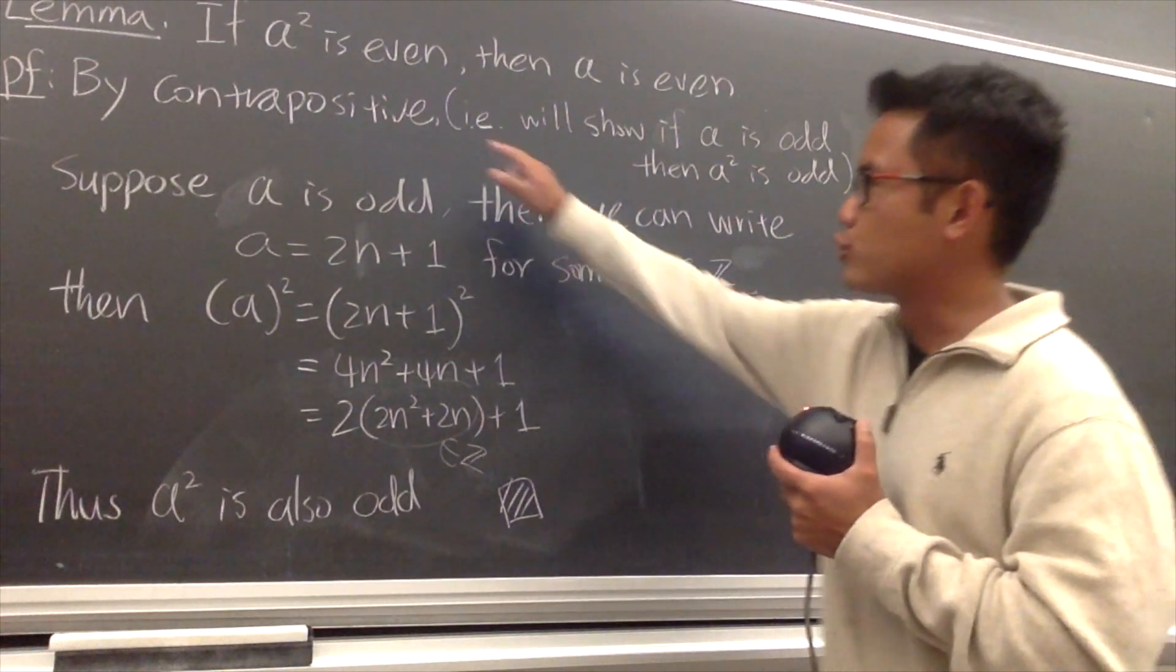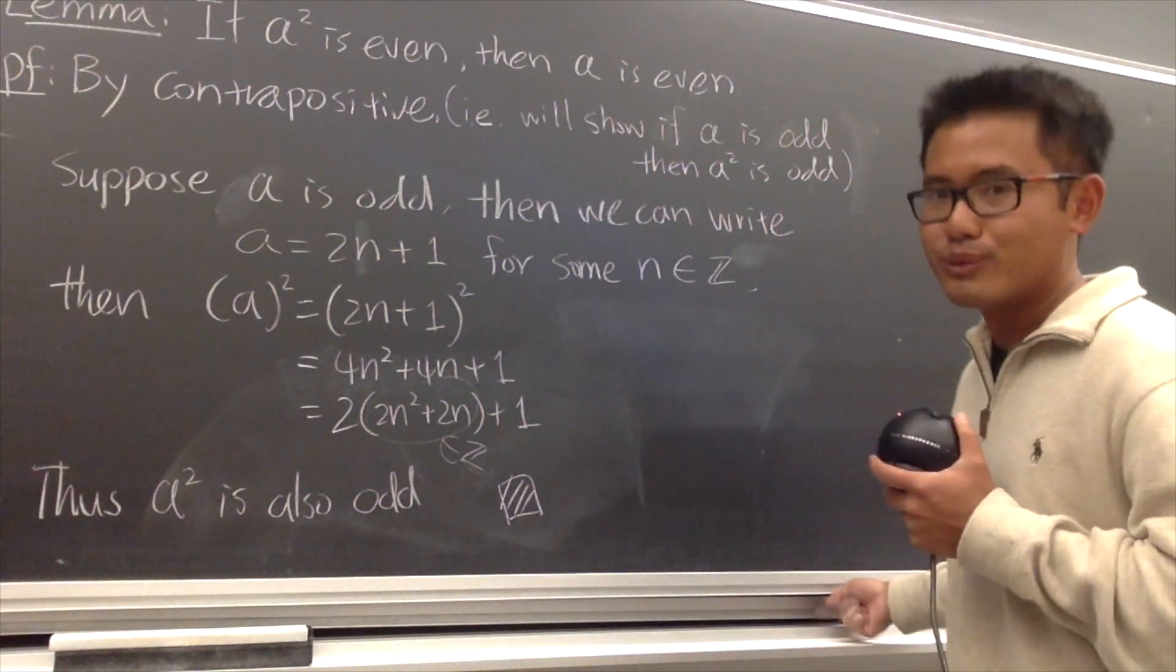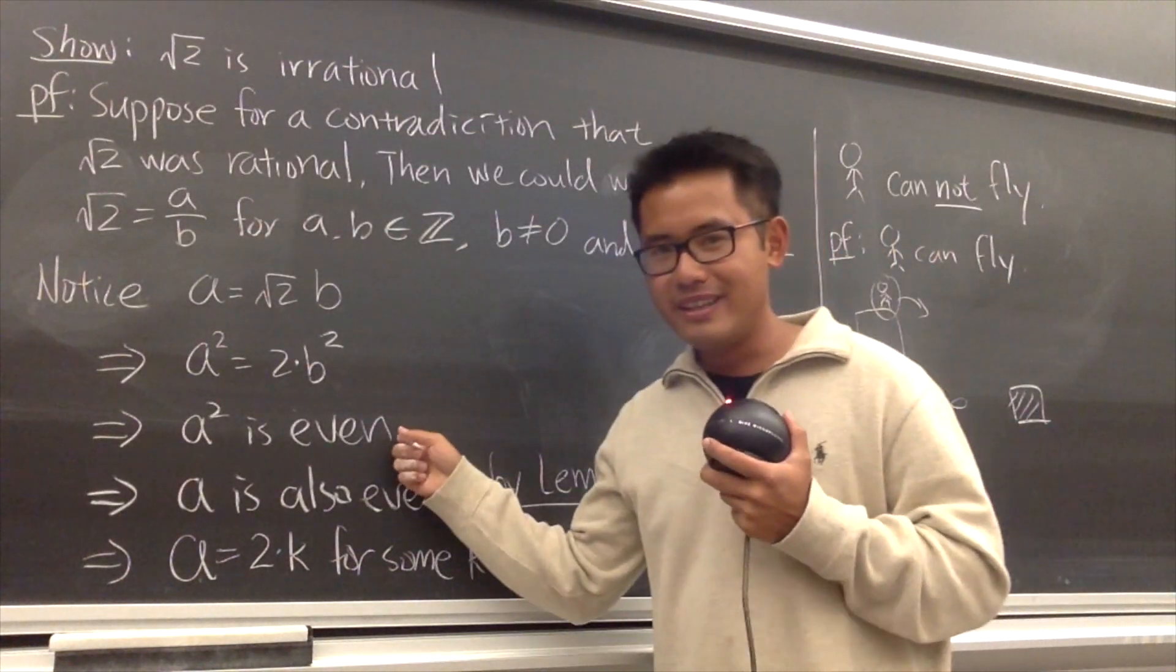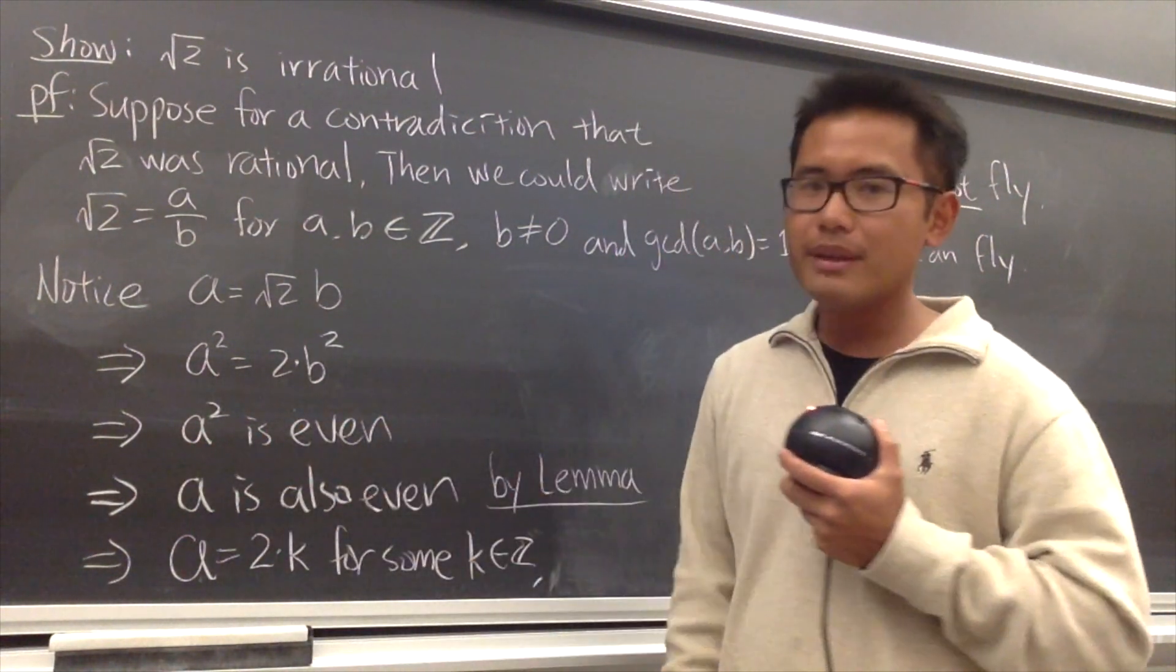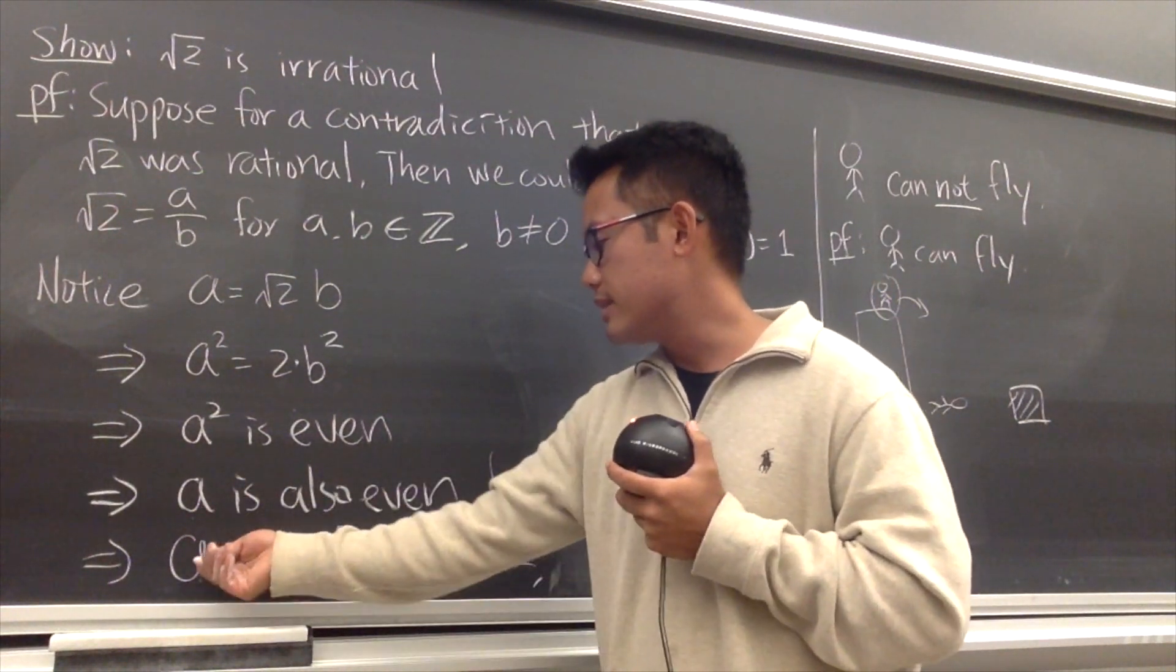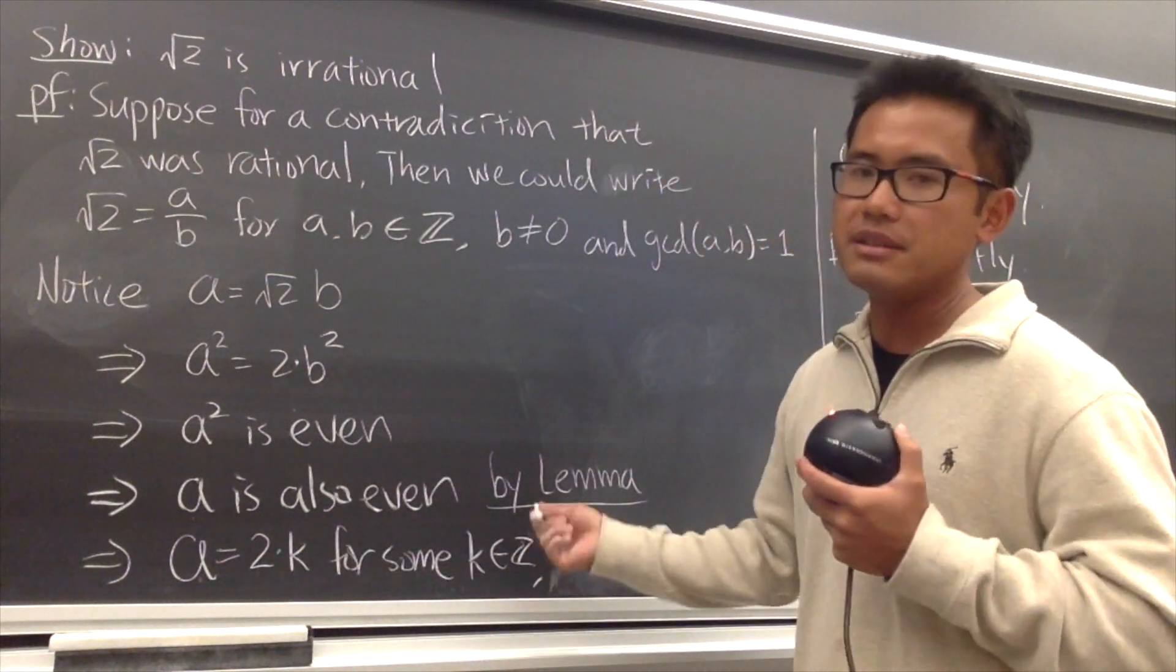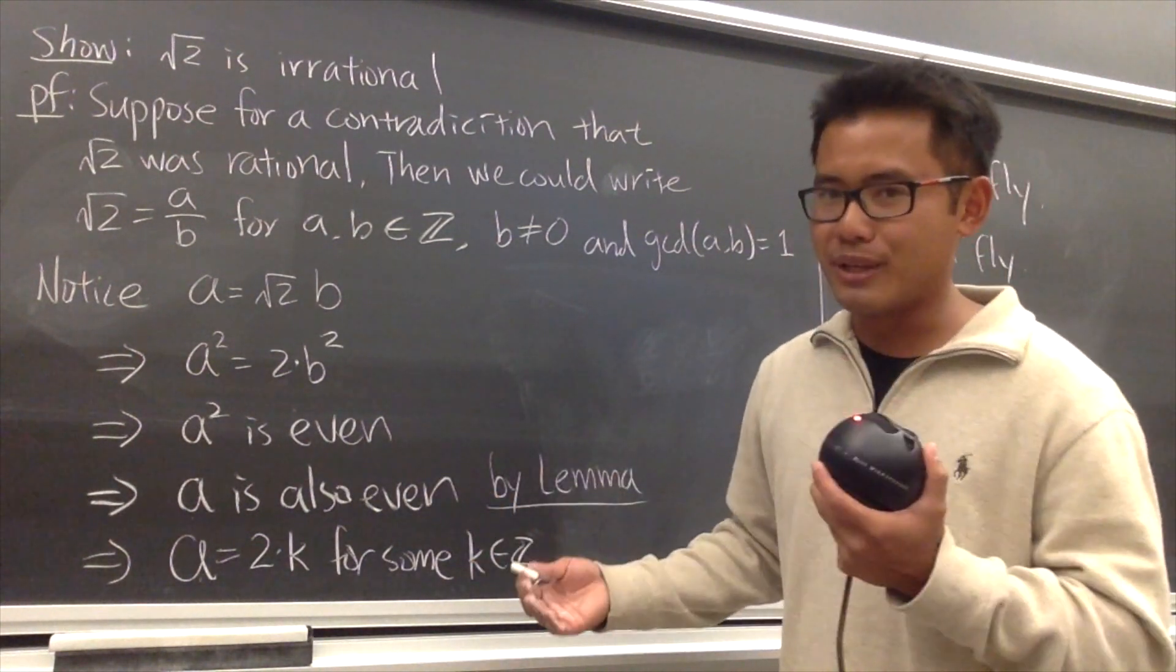So because the contrapositive was true, we proved it, the original statement is also true. So this is how you write down the proofs. Anyway, let's get back to this. a squared is even, a is also even. And because now we are saying that a is an even number, we can write it as a equals 2 times some other integer. So we just put down a equals 2 times k for some k in Z. This part is the fun part, because you're just doing computations.